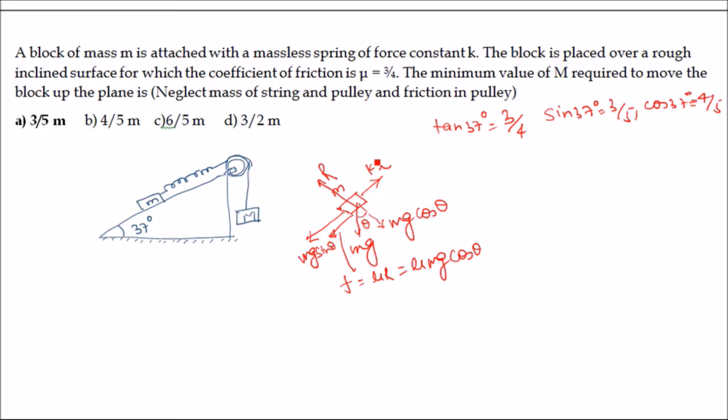The condition is that the block has to move up. When the block is just able to move up, the spring restoring force kx will counterbalance the forces in the downward direction along the plane. So clearly: kx = mg sin θ + μmg cos θ.